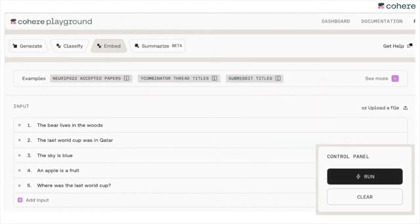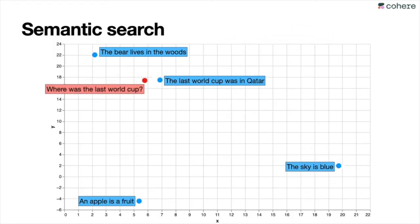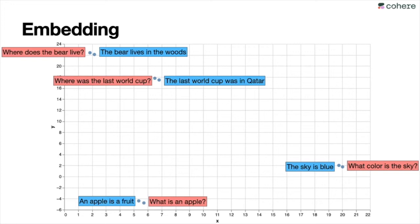You can play with this in the Cohere playground — take the actual sentences, locate them in the embedding, and when you have the query 'Where was the last World Cup,' it appears closest to the correct answer. You can put a bunch more questions and each question is closest to its answer. That's how nearest neighbors work: it looks for the nearest neighbor and says, 'I think this is the answer,' and it seems to work pretty well.